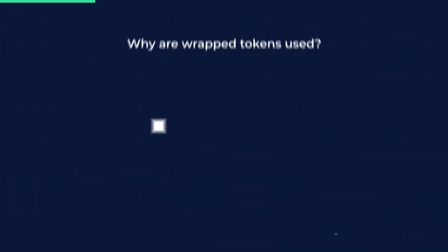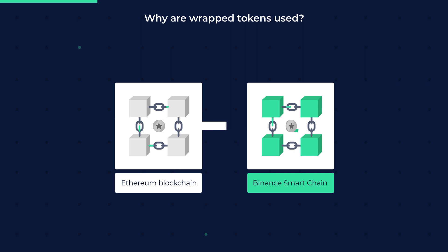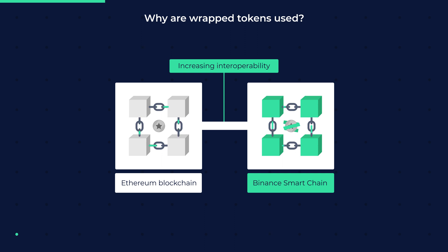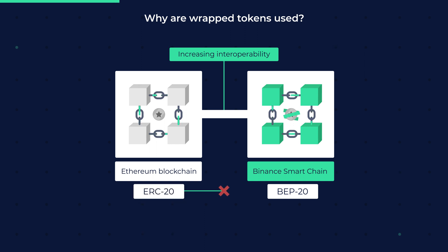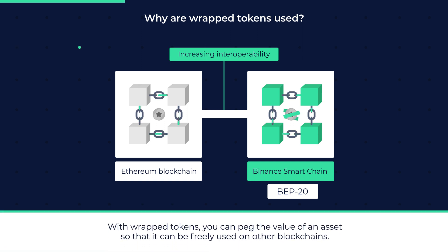Why are wrapped tokens used? Wrapped tokens are a bridge for native tokens to exist on different blockchains, increasing interoperability in the decentralized finance and cryptocurrency ecosystem. There are token standards for various blockchains, such as BEP20 for Binance Smart Chain and ERC20 for Ethereum. It is, however, impossible to use these standards across different blockchains. But with wrapped tokens, you can peg the value of an asset so that it can be used freely on other blockchains.